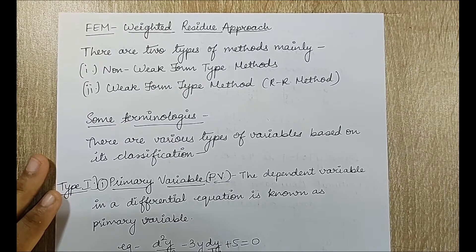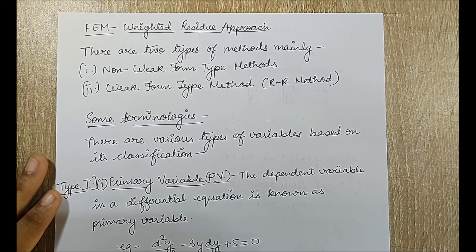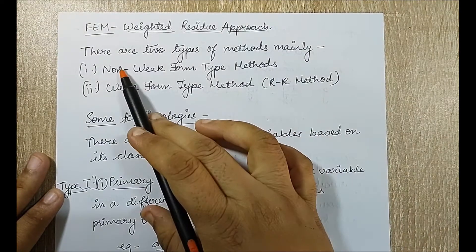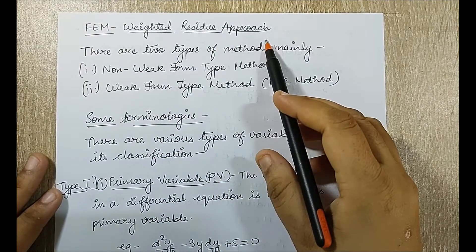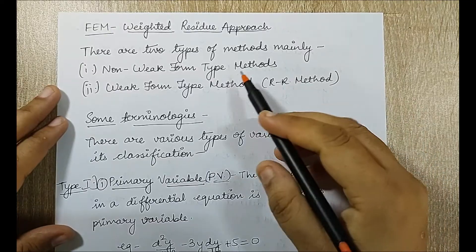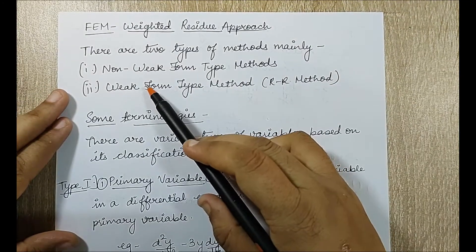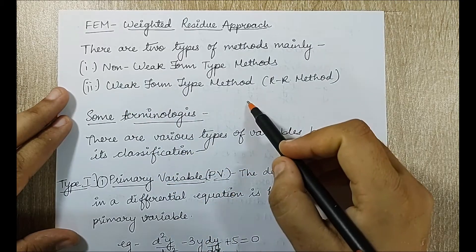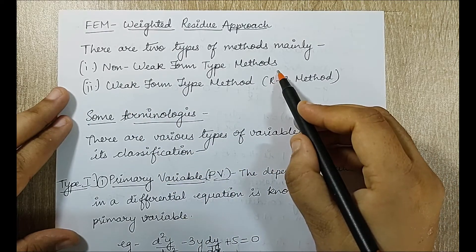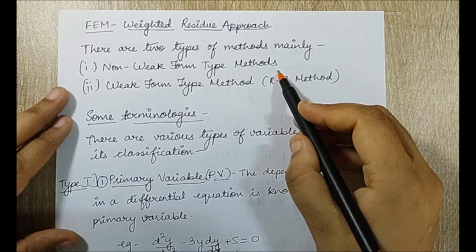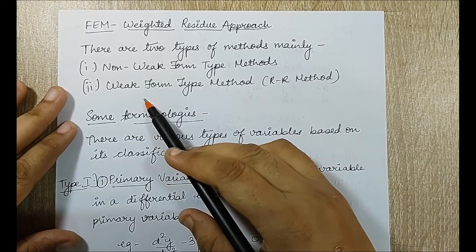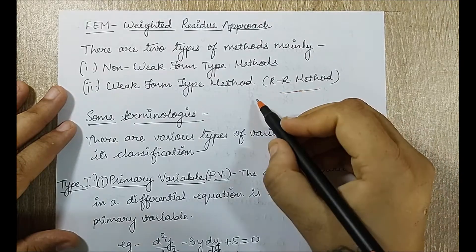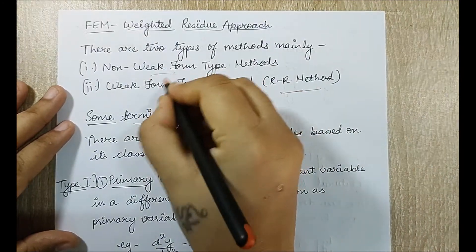Hello everyone, welcome to the next session of finite element analysis. In this session I am going to start with the next topic of FEM weighted residue approach. There are two types of methods: one is called non-weak form type method and the other is called weak form type method. In non-weak form there are five methods we are going to study, and in weak form type there is only one method called the RR method.